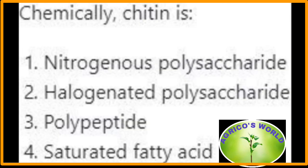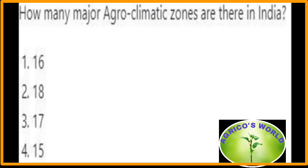Chemically, chitin is a nitrogenous polysaccharide. According to the Planning Commission 1988, there are 15 major agroclimatic zones in India.